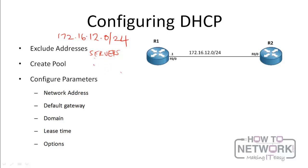You exclude addresses like 172.16.12.1 through .10, then create the DHCP pool and configure its parameters: the network address and subnet mask, the default router (default gateway), the domain name, and the lease time. Lease time is the amount of time an address is leased by a client - essentially the client is hiring or leasing an IP address. When the lease expires, the client must renew it, just like renewing a rent.